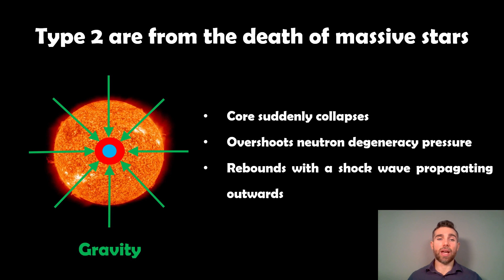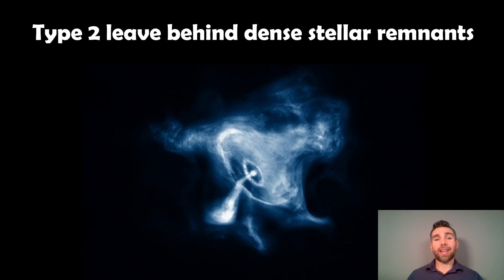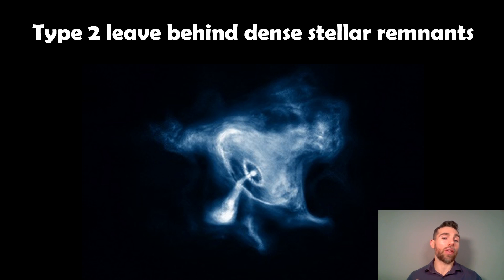A Type 2 is from the death of a massive star — it's the core collapse. This is not thermonuclear. This is when the actual central core of the star stops generating energy, so there's no outward pressure anymore and it collapses due to gravity. What happens then is that it overshoots the neutron degeneracy pressure, and you get a rebound from that. That rebounding shock wave goes through the outer layers, accelerates them, and you get your typical supernova. They will leave behind a stellar remnant — at the centre you will get a neutron star or a black hole. This is an image of a pulsar, which is essentially a neutron star. They're very dense objects left in the centre, unlike the Type 1a, so you do get something left behind from the death of a massive star with a Type 2.